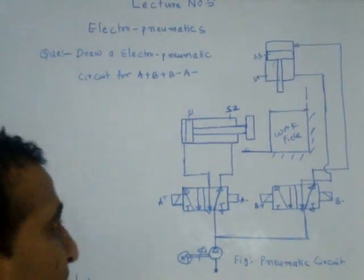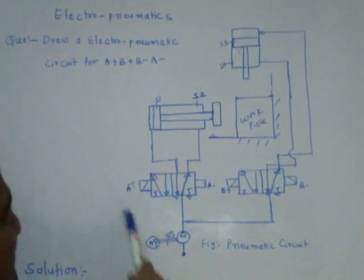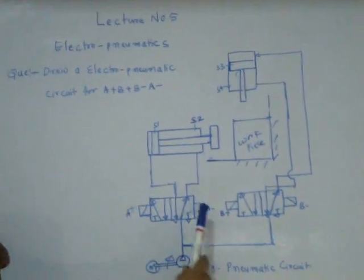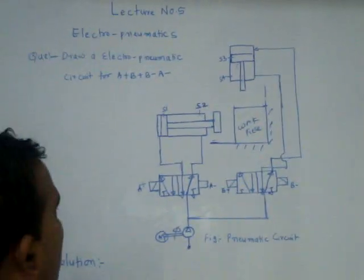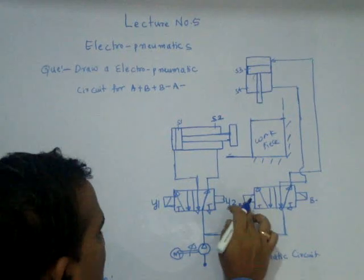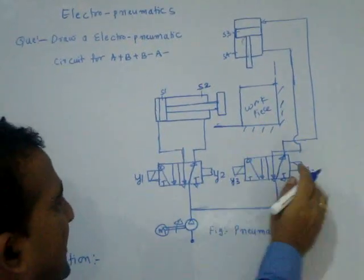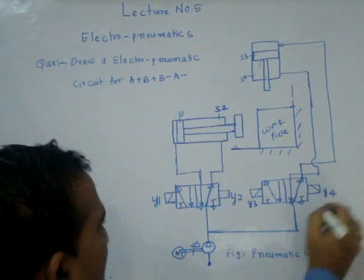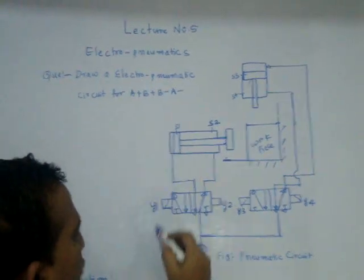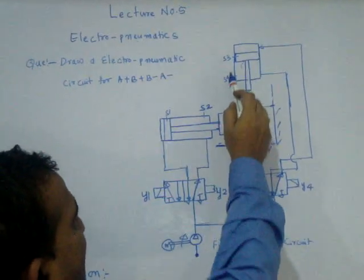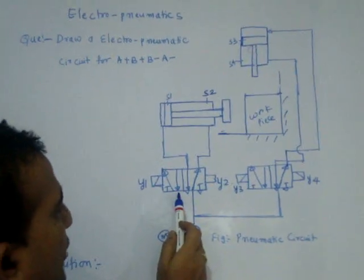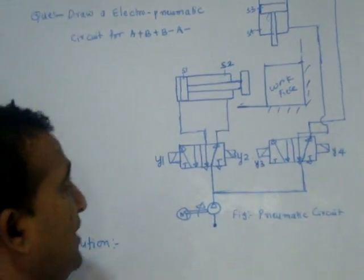We will see the circuit — I have already drawn it. There are two cylinders. For the first circuit, A plus and A minus, I can also call them Y1 and Y2; and here Y3 and Y4. S1 and S2 are two sensors for the first circuit, S3 and S4 are for the second circuit. This is a compressor, this is a motor. This is a 5×2 double solenoid valve, and this is also a 5×2 double solenoid valve.